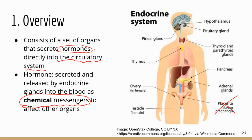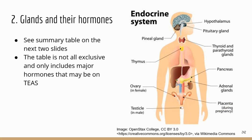Hormones are chemical tools or chemical messengers for the endocrine system to regulate the function of other parts of your body. Your body is really under the control of two systems: the nervous system and the endocrine system. There are some differences, but those two systems work together collectively to regulate the function of your body.